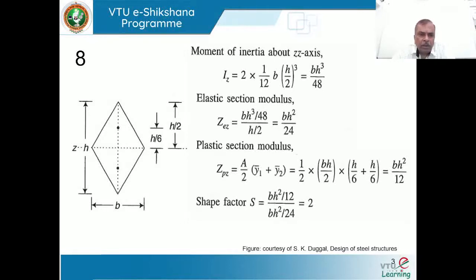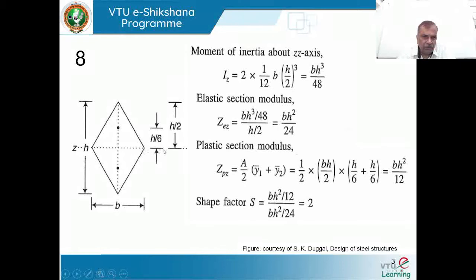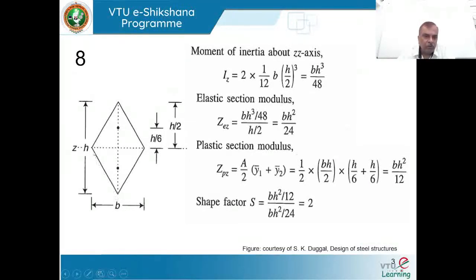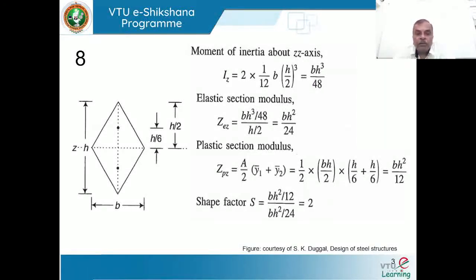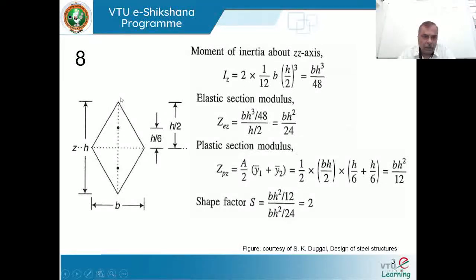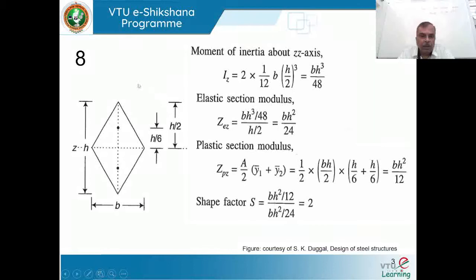It looks like a parallelogram but the sides are equal. It has two diagonals — one is the major diagonal and one is the smaller diagonal. The moment of inertia with respect to the smaller diagonal is slightly more. This is the major diagonal, where the moment of inertia is somewhat less because the depth is more but the width is less. It all depends on how you are placing the section.